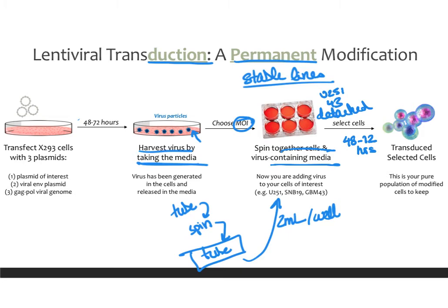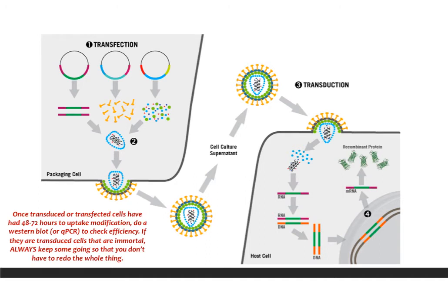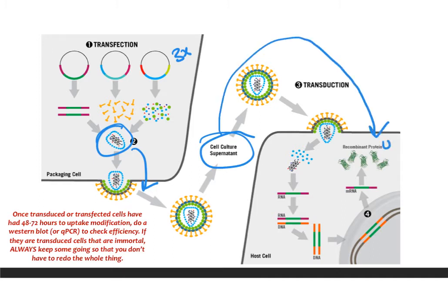At this point you should have transduced cells. You can select them with antibiotics — usually puromycin at a defined dose that won't kill all the cells. Once puromycin treatment is complete, you have a population of selected, transduced cells. Save and freeze this population to have a permanent batch with the right modification. To recap the diagram: three plasmids come together to form a virus in 293T cells, which is released into the supernatant, harvested, and used to transduce cells of interest — creating a permanent DNA modification that every daughter cell will carry.